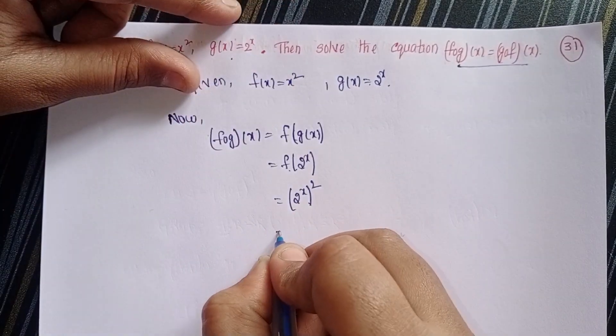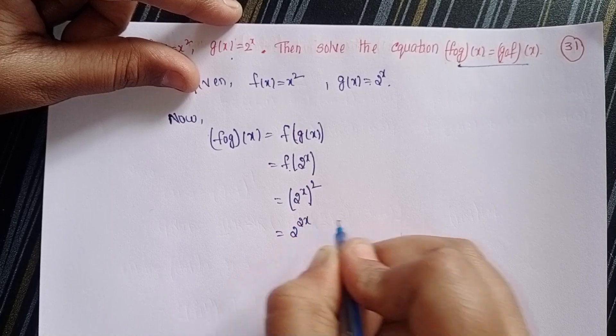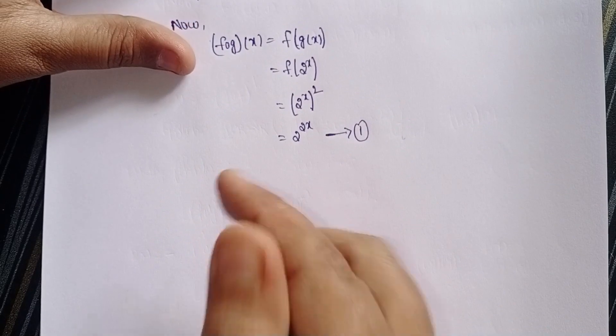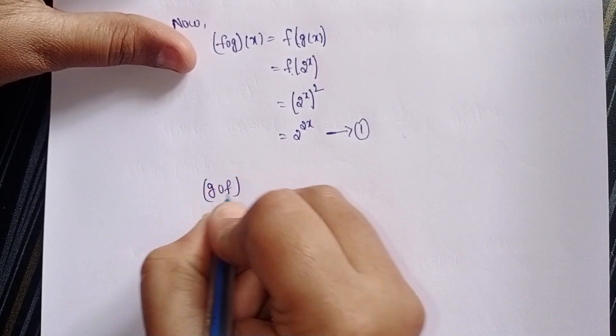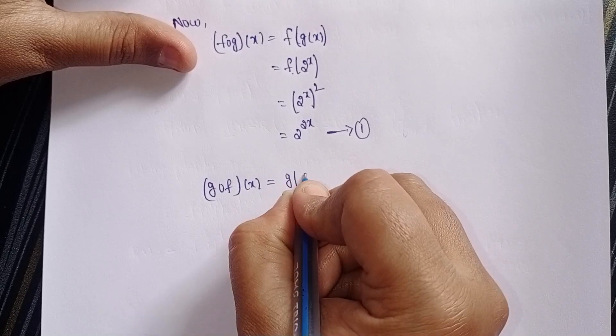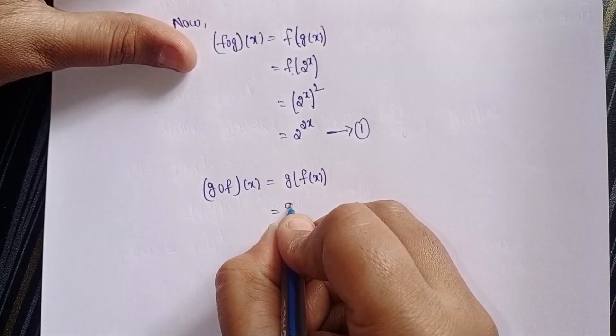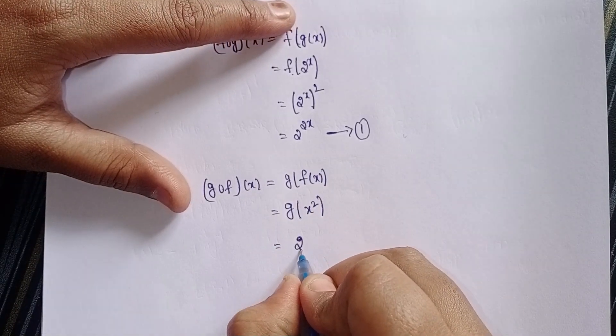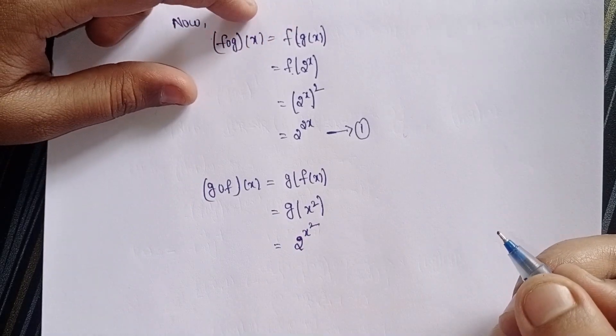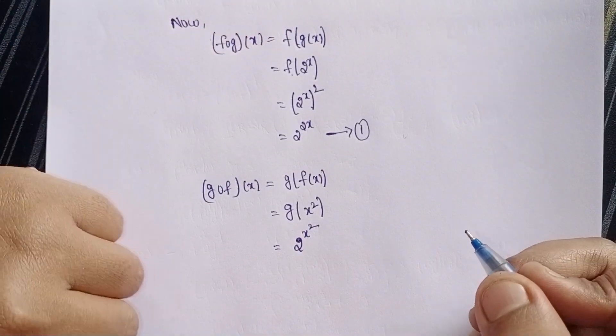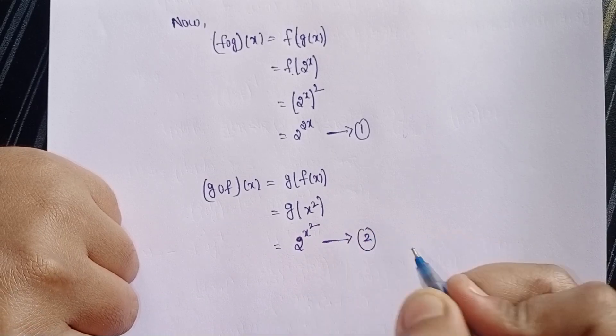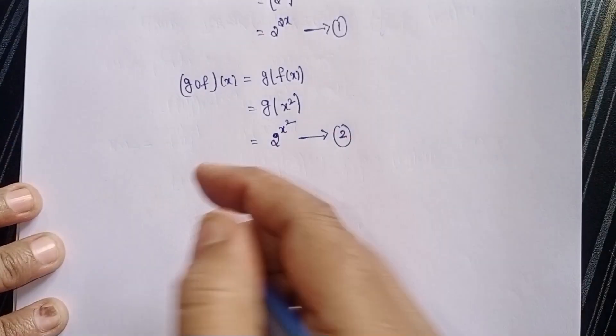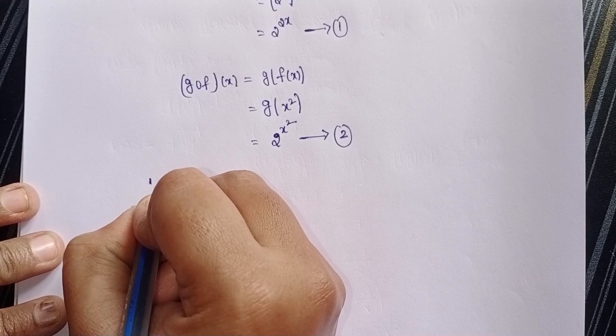Next we need to find out g circle f of x. g of f of x means x square. In g of x we have 2 power x, so it becomes 2 power x square. This is equation number 2. The question asks for the value where these are equal.